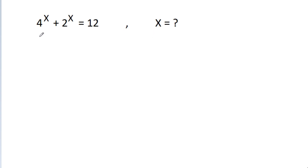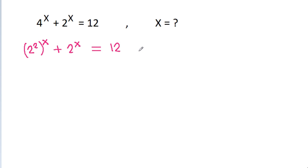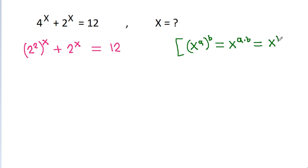So 4 is 2 power 2, so 2 power 2 whole power x plus 2 power x is equal to 2n. And x power a whole power b is equal to x power a times b, that is equal to x power b whole power a.